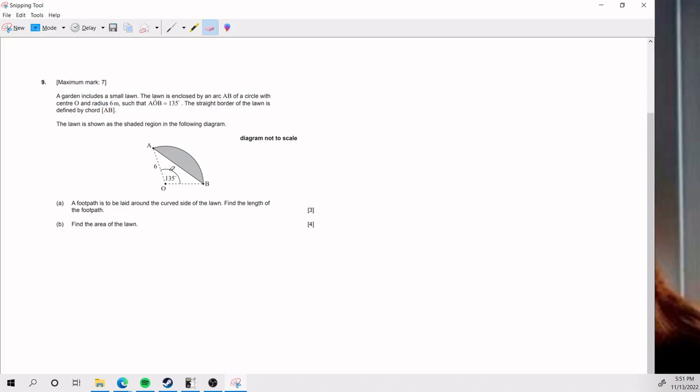All right. So for part A, a footpath is laid around the curved side of the lawn. So that makes reference to this guy here. That right there is where we have the footpath, and we need to find the length of that guy exactly. Now, at this point, a lot of people start thinking, okay, I've got a triangle here. They're trying to remember stuff about circles and they have a little bit of a rough time.